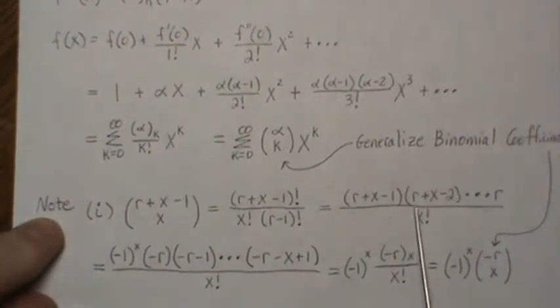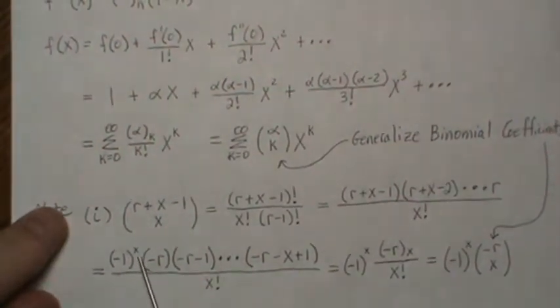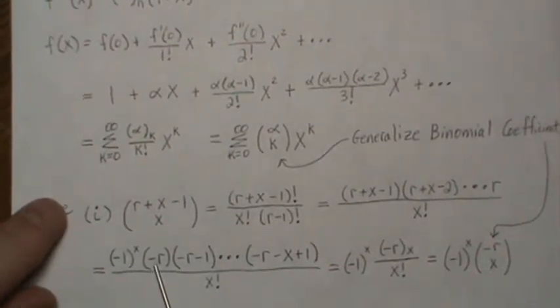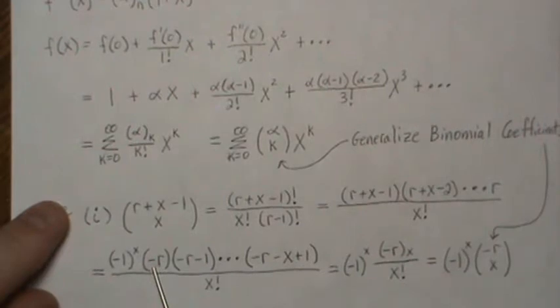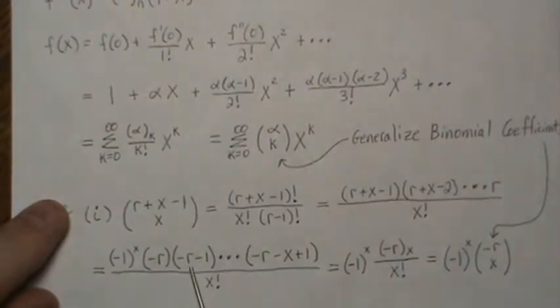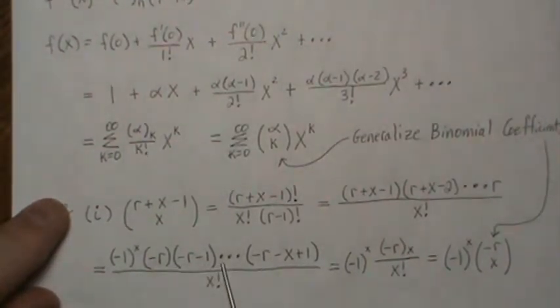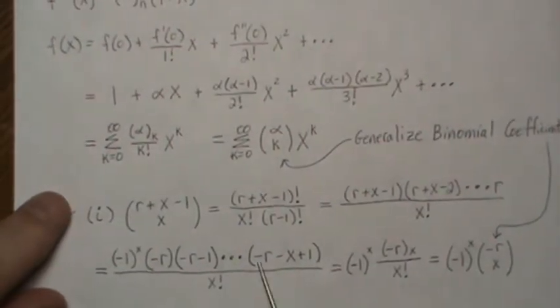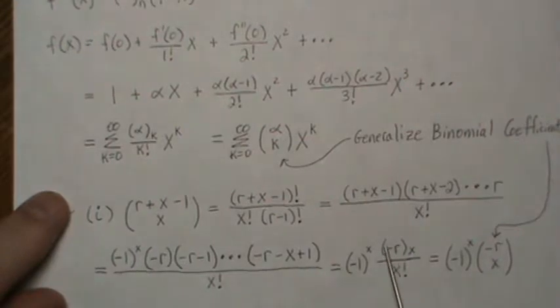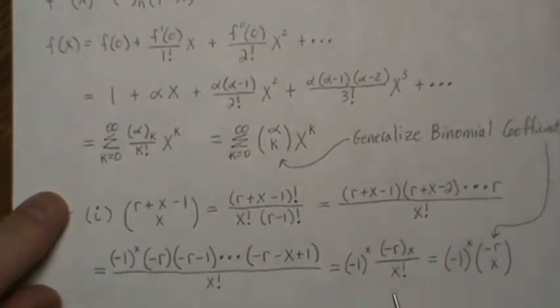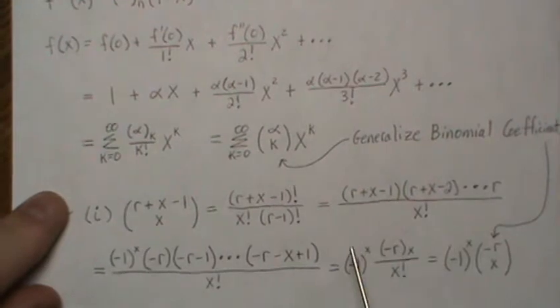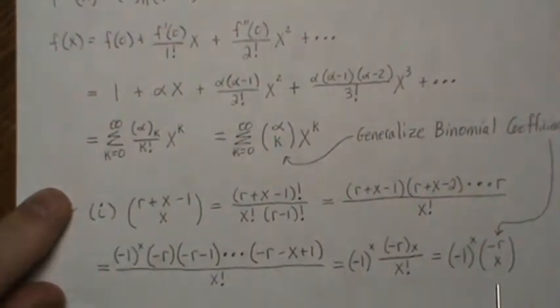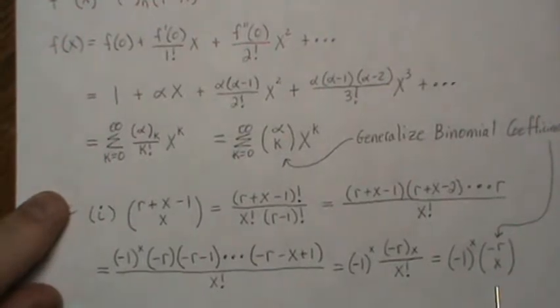So we haven't changed this formula, but this top part is a falling factorial. We start with minus r, then we take it times minus r minus one times minus r minus two, and we keep doing that for x terms. So this can be written in falling factorial form, and then again this piece can be written in a generalized binomial coefficient.